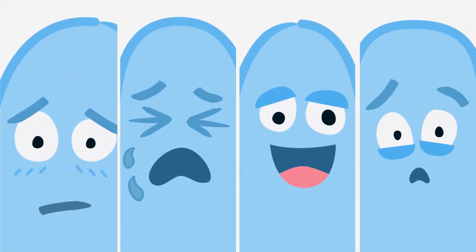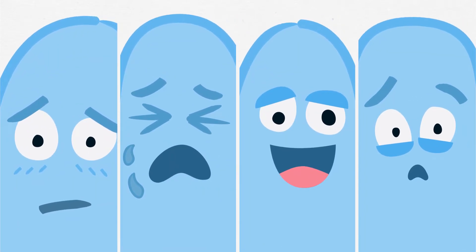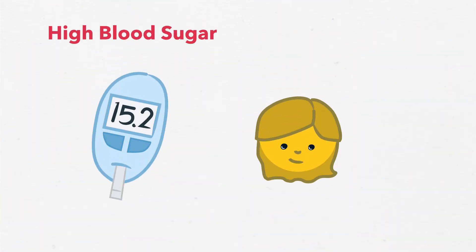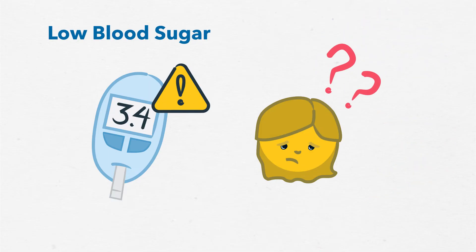A student's blood sugar level can affect how they feel. For example, high blood sugar, usually above 15, can make it hard to concentrate. Low blood sugar, less than 4, can cause confusion.